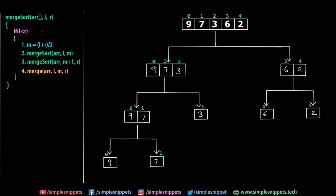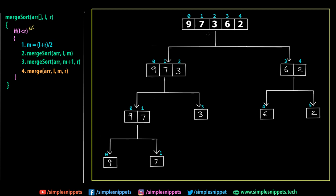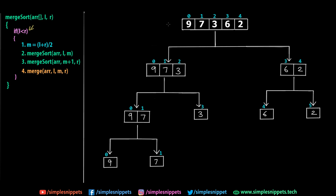On the left side of the screen is the Merge Sort algorithm in pseudocode form, and on the right side is a tree structure showing the divisions. Let's dry-run this on our array of size 5. We give the very first Merge Sort call: MS(ARR, 0, 4). We go inside the function and check the condition: if L < R. L is 0 and R is 4. Since 0 < 4 is true, we go inside the if block.